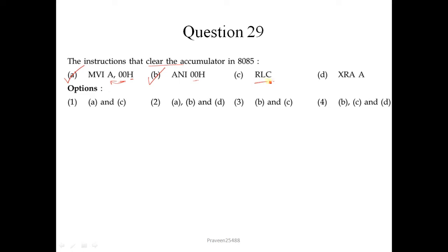The RLC instruction rotates the contents of the accumulator left without carry, so there is no guarantee it will make the contents 00 — this is not correct. And XRA A means the contents of the accumulator are logically XORed with the accumulator itself, so 1 XOR 1 = 0 and 0 XOR 0 = 0, making the accumulator 00. So A, B, and D are correct — the second option is the correct answer.